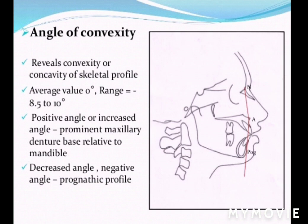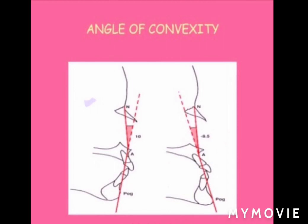Its value ranges from -8.5 to 10 degrees. If the profile is retrognathic — meaning the maxilla is behind the mandible — the value is -8.5 degrees. If the maxilla is prognathic, the value will be 10 degrees. The angle increases when the maxilla becomes prognathic and decreases when the maxilla is retrognathic, as in Class 3 cases. In Class 2 cases, the angle of convexity will be increased.